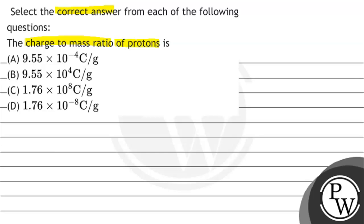The options are: 9.55 into 10 raised to the power minus 4 coulomb per gram. Second is 9.55 into 10 raised to the power 4 coulomb per gram. Third is 1.76 into 10 raised to the power 8 coulomb per gram. Fourth is 1.76 into 10 raised to the power minus 8 coulomb per gram.